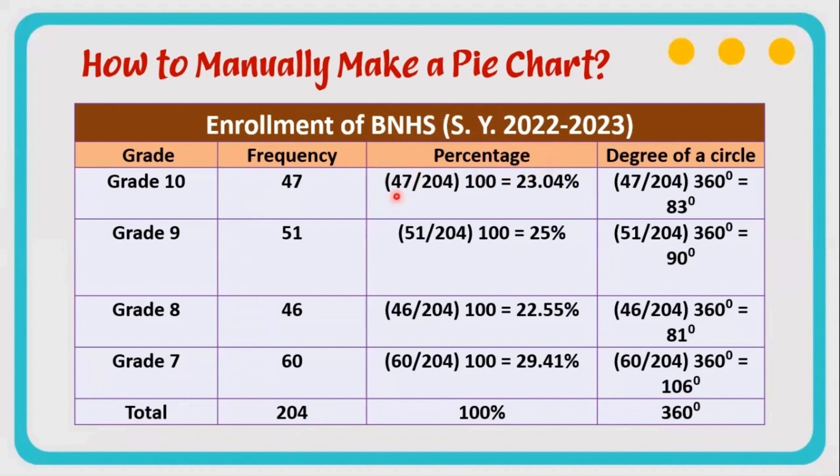We have here 47. We get 47 from here and divide by the total. The total is 204, and then we have to multiply its quotient by 100, and then we get 23.04%. We only have to follow those steps until we get all the percentages.